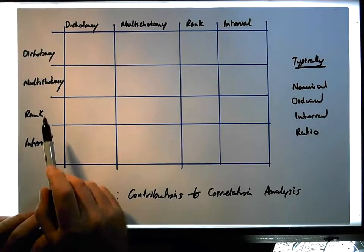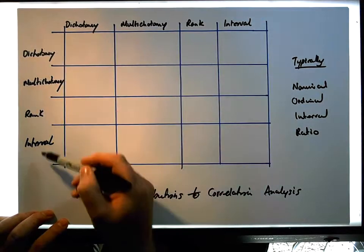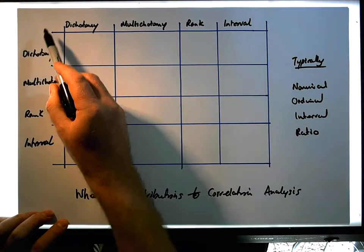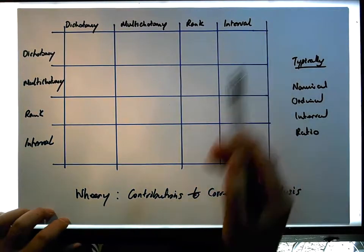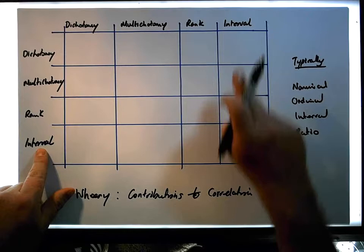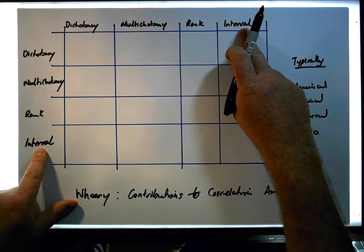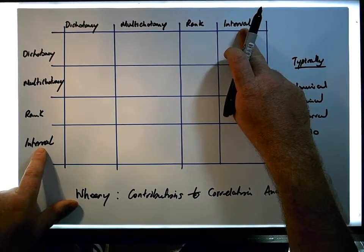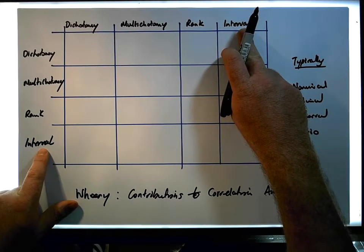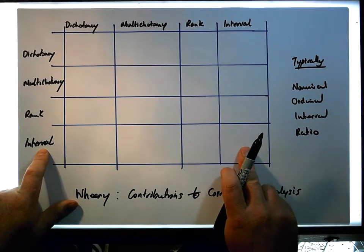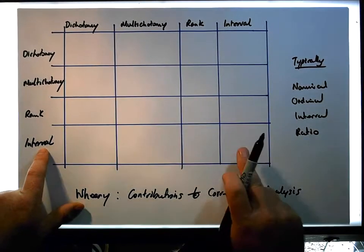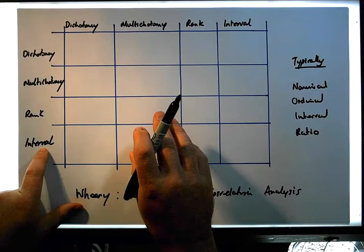From this particular table, I have the same variable types and scales of measurement listed down the first column as well as across the top. The question now is: if I have an interval variable and another interval variable — my X's and my Y's, both measured on an interval/ratio scale — what is the appropriate correlation coefficient to use in that particular circumstance?